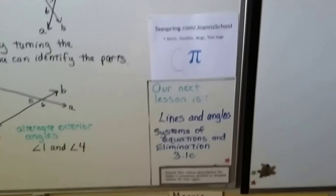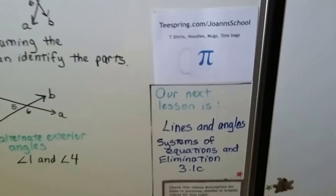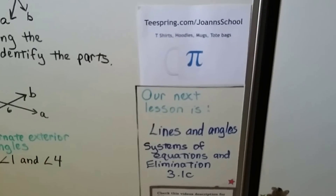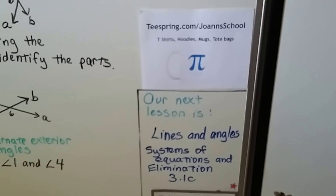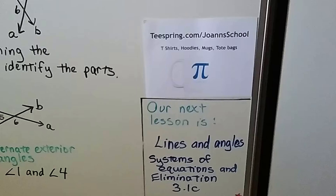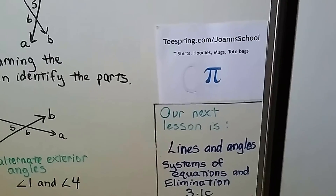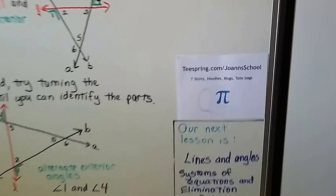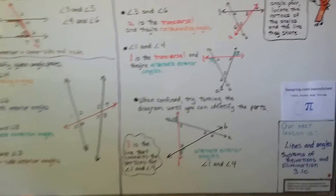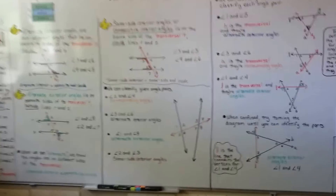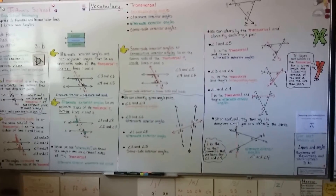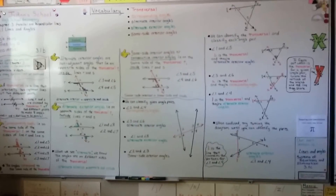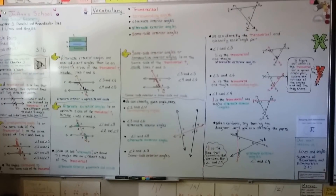Our next lesson is still in the lines and angles unit — it's going to be Systems of Equations and Elimination, lesson 3.1c. It's a review of what we did in Algebra 1. If you're good at the elimination method, you can just watch without taking notes; if you have trouble remembering, take notes. See you there — bye!